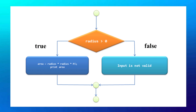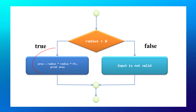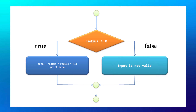For example, you can see in this flowchart that if the radius of a circle is greater than zero, then it will calculate the area of the circle and print it. If the condition is false, it will go to the other flow and print that the input is not valid — meaning if a negative value is given, it will print that the input is not valid.